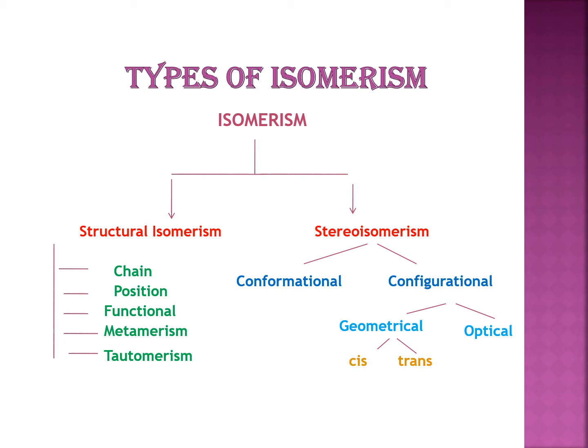Stereoisomers are further classified into two categories: conformational and configurational. Configurational is further classified into two categories: geometrical and optical. Geometrical isomers are further of two types: cis and trans isomers.